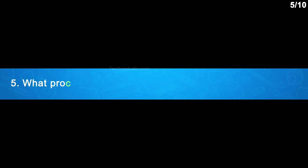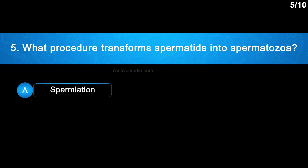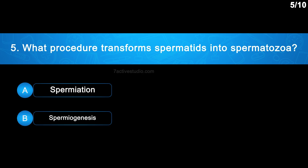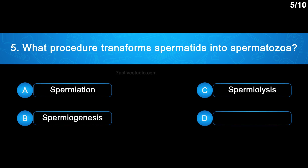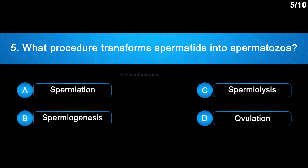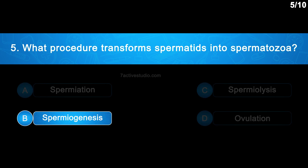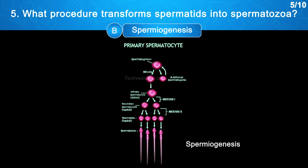Question 5: What procedure transforms spermatids into spermatozoa? Option A: Spermiation. Option B: Spermiogenesis. Option C: Spermiolysis. Option D: Ovulation. The correct answer is Option B — spermiogenesis. Transformation of spermatids into spermatozoa is called spermiogenesis.